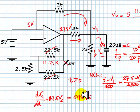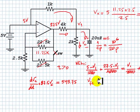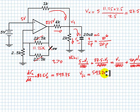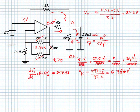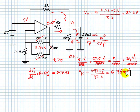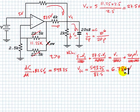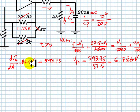This first-order differential equation has a straightforward solution. The final value of the capacitor voltage is given by 59375 divided by 87.5, which equals 6.786 volts. The time constant of change between the initial voltage of 10 volts and the final value of 6.786 volts is given by 1 divided by 87.5 seconds.